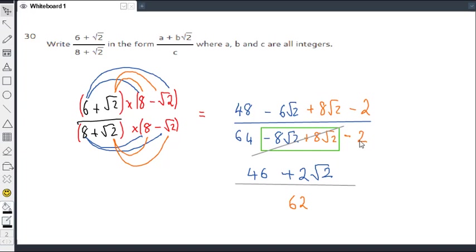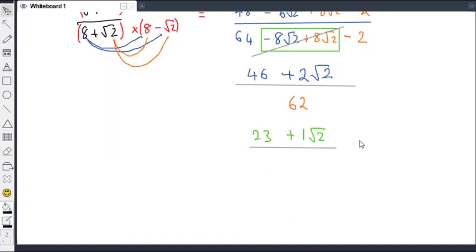That's going to give us a final answer of 23, 46 divided by 2, plus 1, 1 you could put 1 there, root 2, all over half of 62, which is 31.